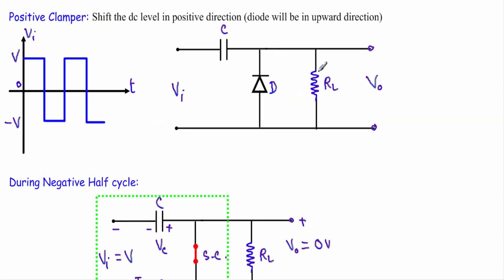Now I will talk about the positive clamper circuit. A positive clamper is a circuit which shifts or pushes up the DC level or reference level of the input voltage in the upward or positive direction. A simple way to identify whether a clamper circuit is positive or negative: when the diode is in the upward direction, that clamper will be a positive clamper. Let's say we are applying a square wave to the input side of this clamper circuit, which contains a capacitor, diode, and load resistor. I will show how we deduce the output voltage and draw the output waveform.